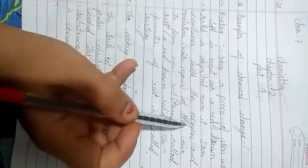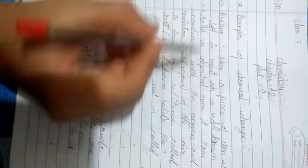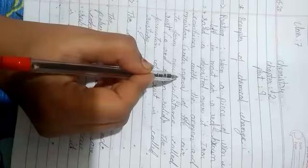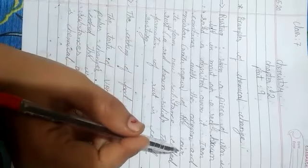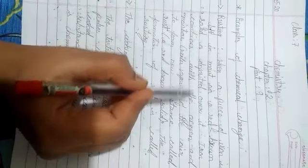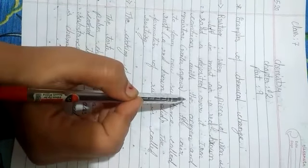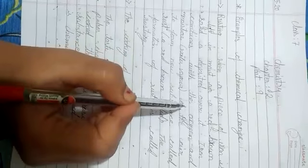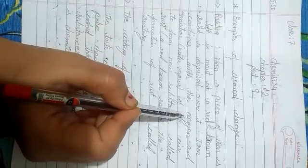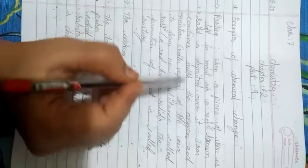Iron combines with the oxygen and moisture, i.e. water vapor of the air, to form a new substance. And why does this layer form on a piece of iron? This layer forms on a piece of iron because iron combines with oxygen, or you can say iron reacts with oxygen and moisture.